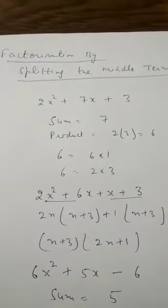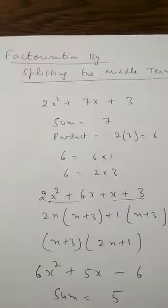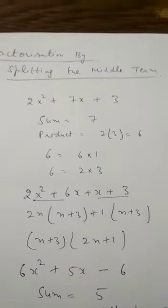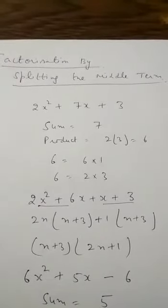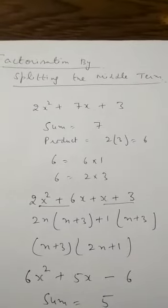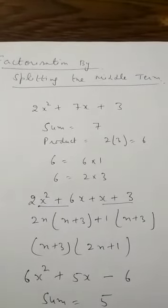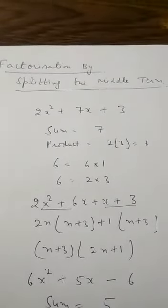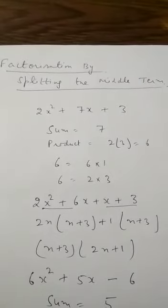The next topic is factorization by splitting the middle term. I think you have already done it in class 8. Let's discuss how to factorize a quadratic polynomial by splitting the middle term. Consider the polynomial 2x² + 7x + 3. You will split the middle term into two numbers such that their sum is 7 and their product is 2 × 3 = 6.